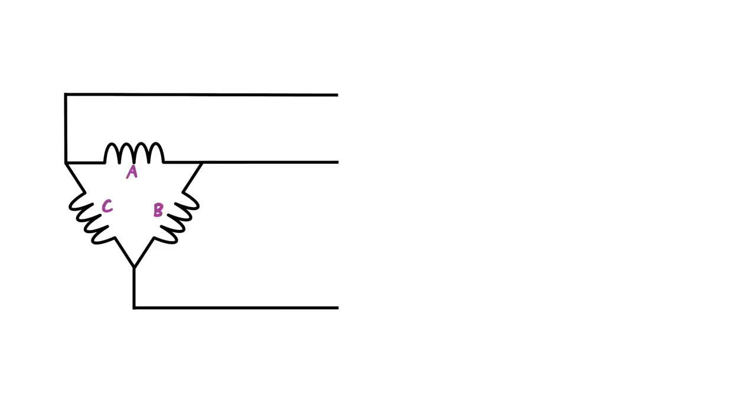So first off, let's just give these guys a name. We'll call this one A phase, this one B phase, and this one C phase. As I always love to do, I try to get my polarities drawn in here. So I've got a negative and a positive, and a negative and a positive, and a negative and a positive.